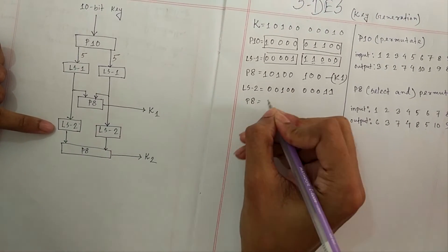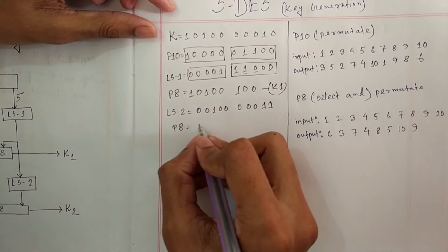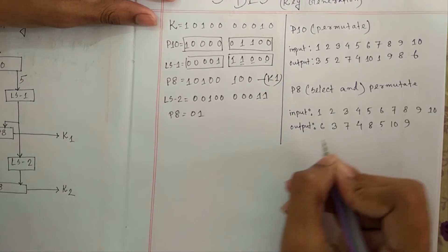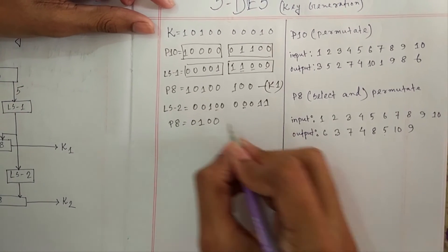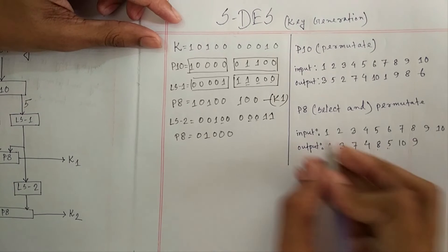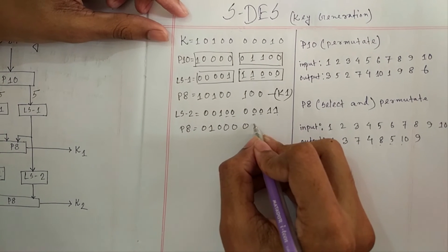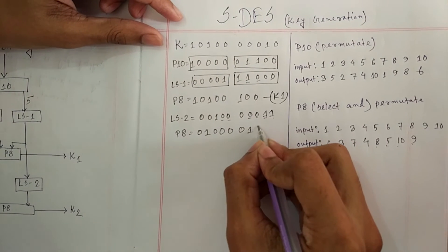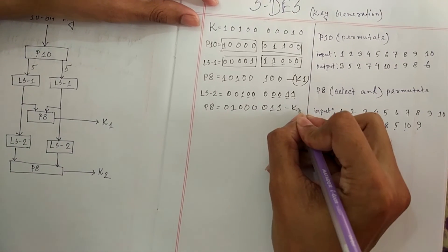Now we calculate P8 from LS-2 using the same process. Position 6 to 1 (value is 0), position 3 to 2 (value is 1), position 7 to 3 (value is 0), position 4 to 4 (value is 0), position 8 to 5 (value is 0), position 5 to 6 (value is 0), position 10 to 7, position 9 to 8 (value is 1). We have now found the P8 value, which is Key 2.